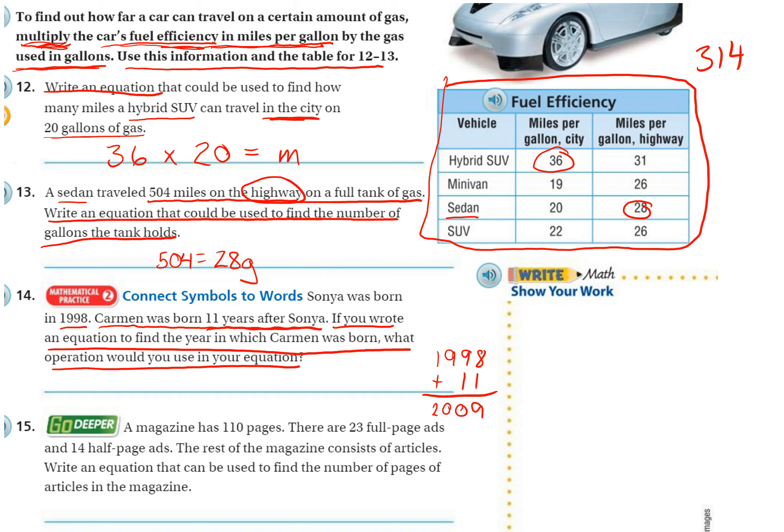Now the book says subtraction, but it does say possible answer subtraction. So maybe the book would do a number minus 1998 equals 11, which you could do it that way as well. To me, this is much easier though. So I would use addition. But both of these equations will both give you 2009 as your answer.